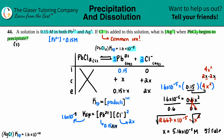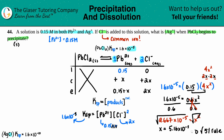Now let's check the five percent rule. Take the answer, 5.16×10⁻³, divide by the initial concentration 0.15, and multiply by 100. That gives 3.44%. Since 3.44% is less than 5%, the approximation is valid — we're good to proceed with our answer.